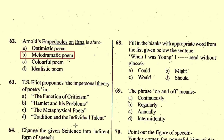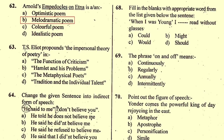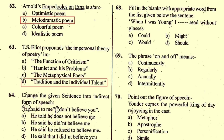Question number 63: T.S. Eliot propounds the impersonal theory of poetry in — T.S. Eliot's essay 'Tradition and the Individual Talent' was published in 1919, in which his views on the impersonality of the artist first appeared. The right option is D, 'Tradition and the Individual Talent'.